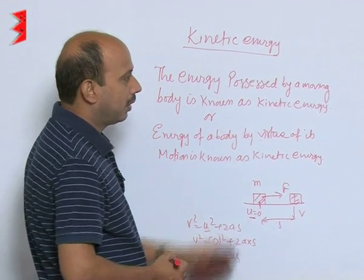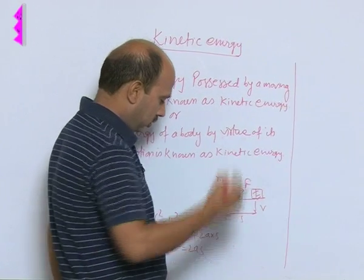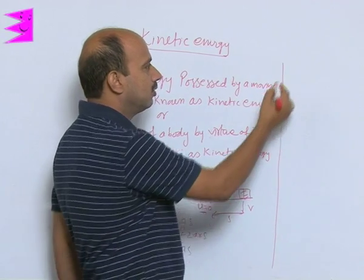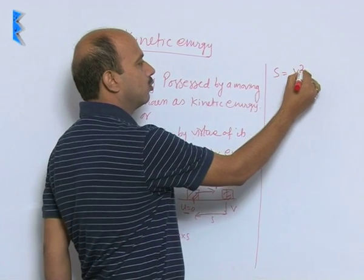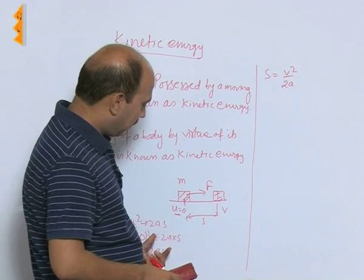Now we can get distance from here and we can write this side. We can write here distance s is equal to v square upon 2 a. So this is the distance travelled by the body.